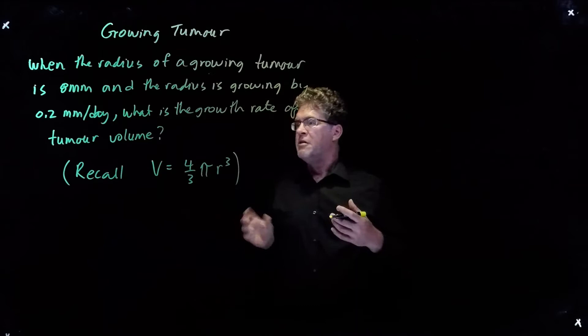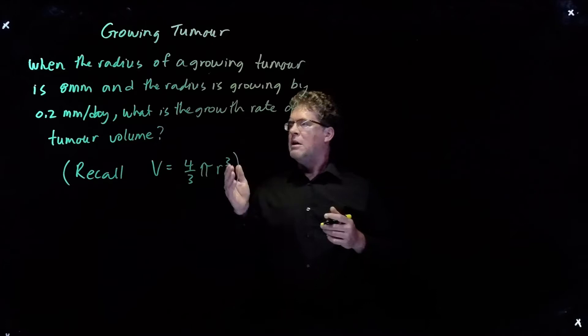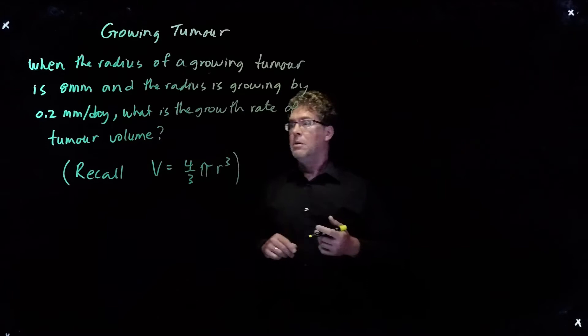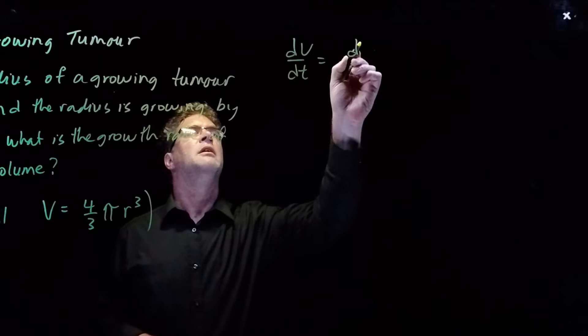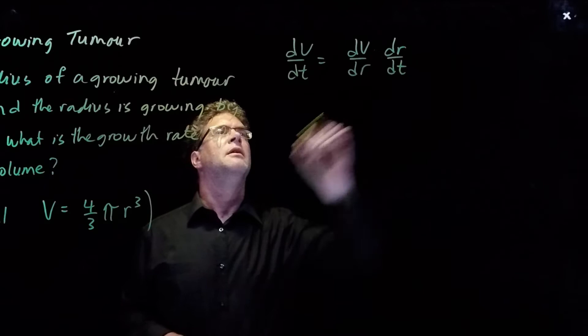So we need to relate the volume to the radius, and this is the formula between volume and radius. Volume is four-thirds pi r cubed. And so if we want to get the rate of change of volume with respect to time, we can write dV/dt. And this would be dV/dr times dr/dt.